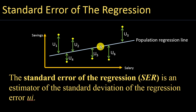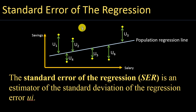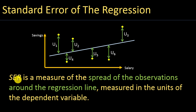In other words, the regression is not a good estimator of the actual observations. At a high level, the standard error of the regression is an estimator of the standard deviation of the regression error, indicated by the letter U, where i can be 1, 2, 3, 4, etc. So the standard error of the regression tells us the standard deviation of the error term — in other words, how spread the errors are from the regression line. Standard error of the regression is a measure of the spread of the observations around the regression line.